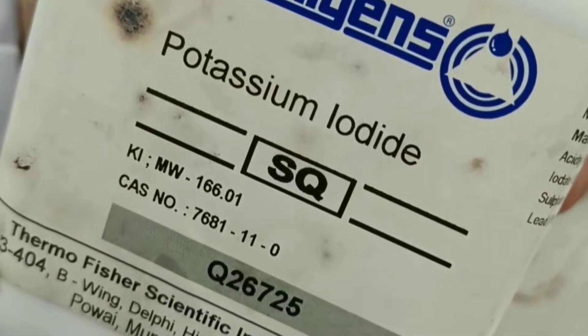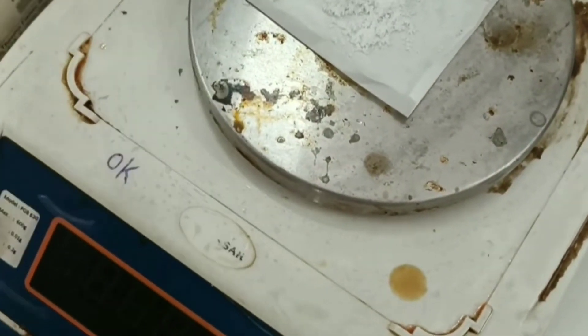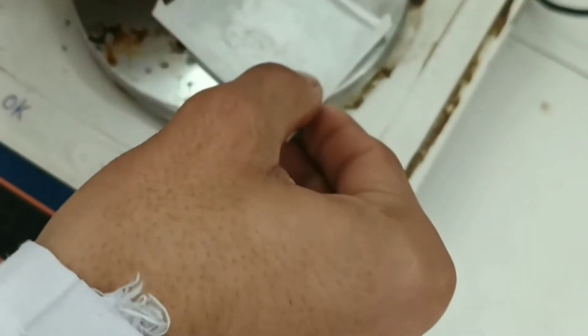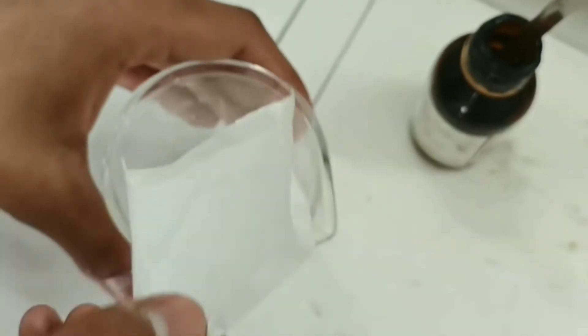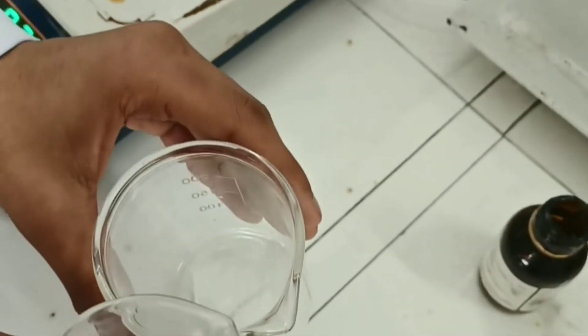First, we will weigh 1.5 grams of potassium iodide and dissolve it in a small amount of distilled water. Now mix it with a glass rod to dissolve it properly.